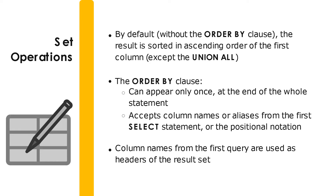If we do not have an ORDER BY clause, by default the result is sorted in ascending order of the first column, except for UNION ALL. If we have an ORDER BY clause, it should only appear once at the end of the entire statement, and it can only accept column names or aliases from the first SELECT statement or the positional notation. Take note that column names from the first query are used as the headers of our results.